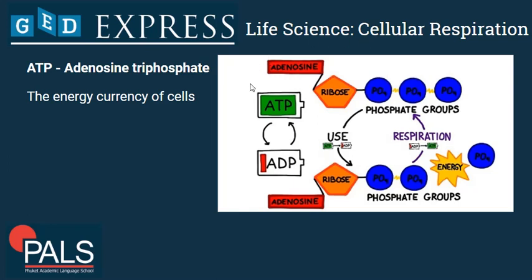Here we see an ATP molecule. As the name says, it has a triphosphate — three phosphate groups attached to another molecule part. Whenever a bond is broken between two phosphates, it releases a small amount of energy that the cell is able to use for any process it needs energy for.